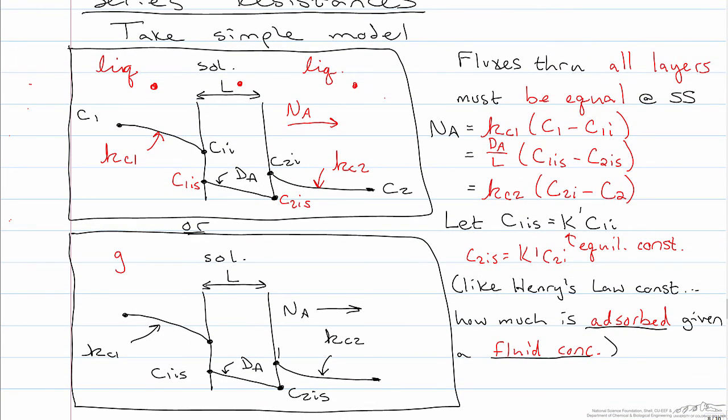In the gas-to-gas mass transfer situation, it looks very much the same, except that we talk about partial pressures instead of concentrations in this case. But other than that, the idea is the same. We set the fluxes through each boundary layer and through the membrane all equal to each other.